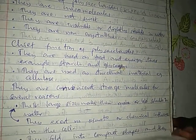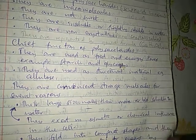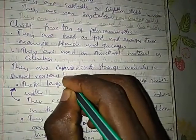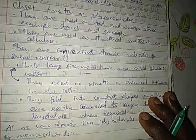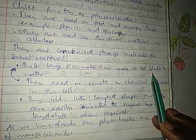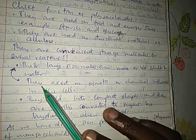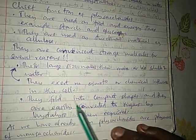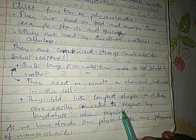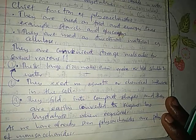Why are polysaccharides used as storage molecules rather than monosaccharides or disaccharides? The first reason is that their large size makes them more or less insoluble in water. The second reason is that they exert no osmotic or chemical influence in the cell. The third reason is that they fold into compact shapes and are easily converted to sugars by hydrolysis when required.